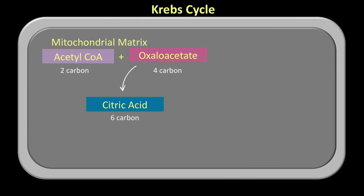Acetyl-CoA formed in the link reaction kickstarts the Krebs cycle. To understand this, let's consider how one molecule of acetyl-CoA reacts in the Krebs cycle — we know two molecules were formed in the link reaction, so we can always double the products. This one molecule of acetyl-CoA will combine with one molecule of a four-carbon compound called oxaloacetate, which is already present in plenty in the mitochondrial matrix.